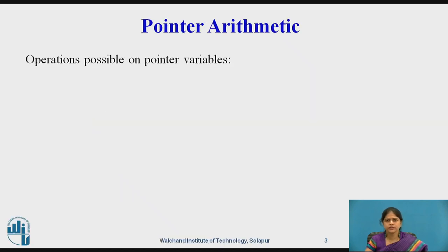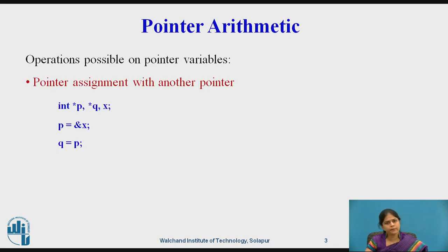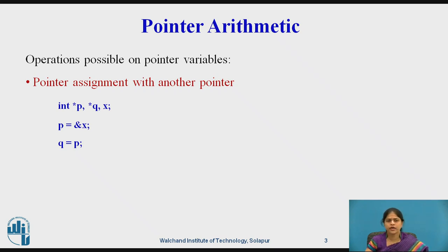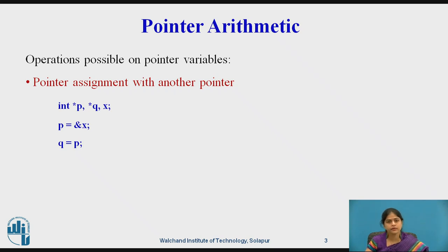Pointers can be used in arithmetic expressions as they are numeric values. Let us see some rules regarding pointer arithmetic. A pointer variable can be assigned a value of another pointer variable, provided they are of the same type. For example, if we have integer pointers p and q, and x is an integer variable, we store the address of x inside p. Then q equals p means we are assigning the value of p to q — so the assignment operator can be applied on pointers.